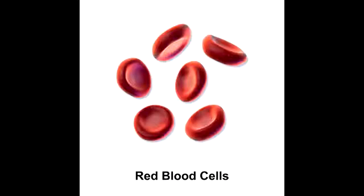The typical lifespan of an erythrocyte is 120 days. Because erythrocytes do not have mitochondria, they do not use any of the oxygen they carry, but instead use glucose as their source of energy.